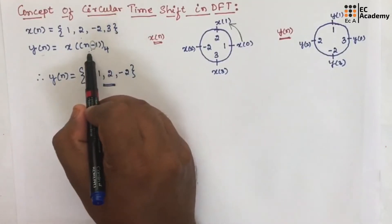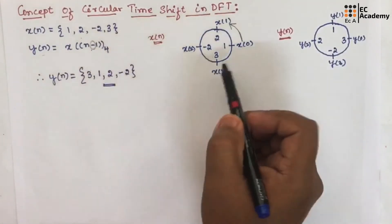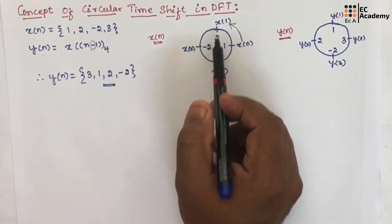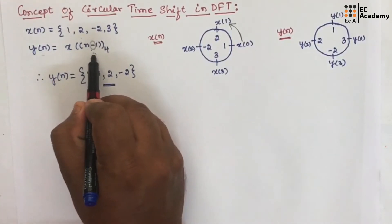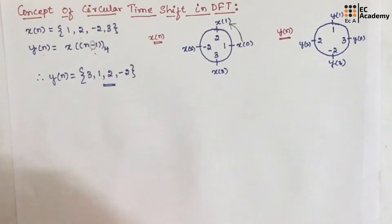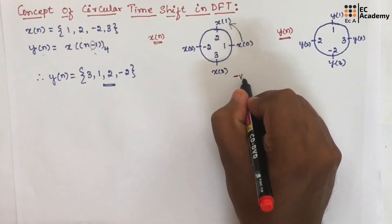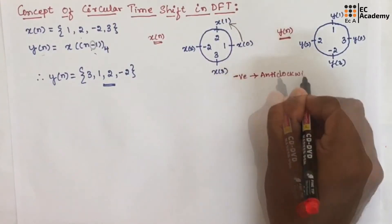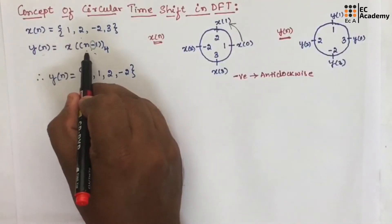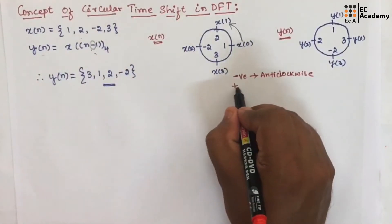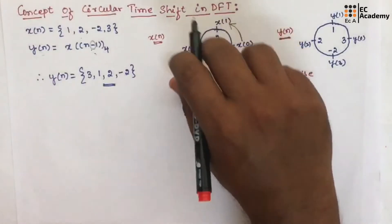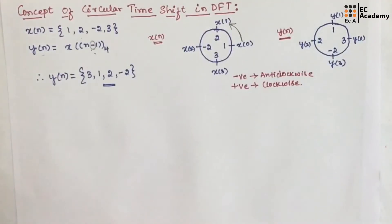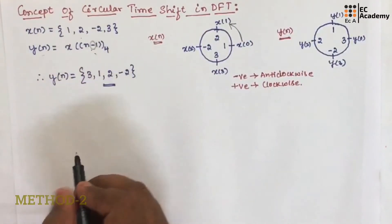Now if they ask you to find x of n minus 2, in that case we need to rotate x of n in the anti-clockwise direction for 2 steps. So if they give a negative sign in the equation, you need to rotate in the anti-clockwise direction. If they give x of n plus 1, for a positive sign we need to rotate x of n in the clockwise direction. You need to remember this concept. We can also use one more method.